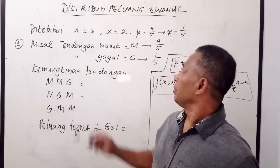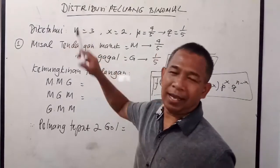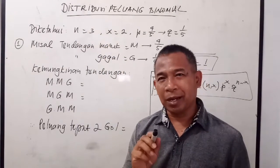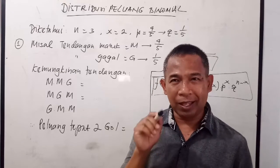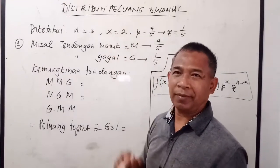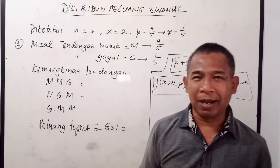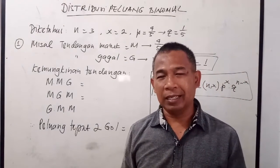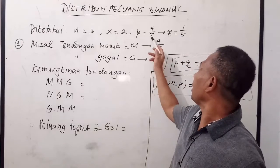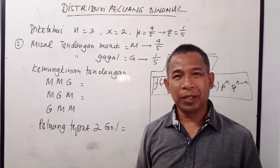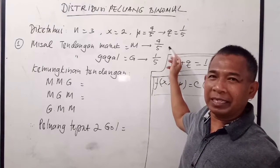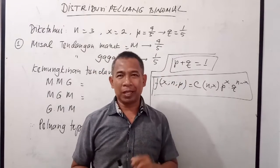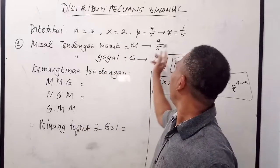Kita identifikasi. Diketahui bahwa N sama dengan 3, artinya Iwan melakukan percobaan sebanyak 3 kali. Kemudian X yang diharapkan adalah 2. Karena peluang masuknya adalah 4 per 5, berarti P-nya 4 per 5. Karena peluangnya hanya terjadi 2 kejadian yaitu sukses dan gagal, apabila suksesnya 4 per 5 maka gagalnya adalah sisanya dari 1, yaitu 1 per 5. Sehingga Q-nya adalah 1 per 5.